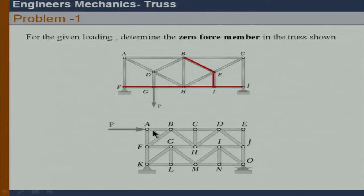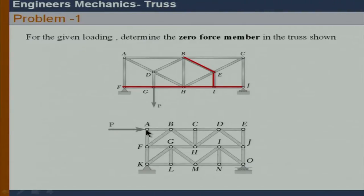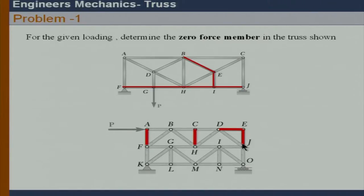Applying the same logic to another truss: starting from joint A, AF equals zero. Going to joint E, under the special condition, both forces equal zero. Similarly, CH equals zero, NI equals zero, LG equals zero — all are under special conditions.